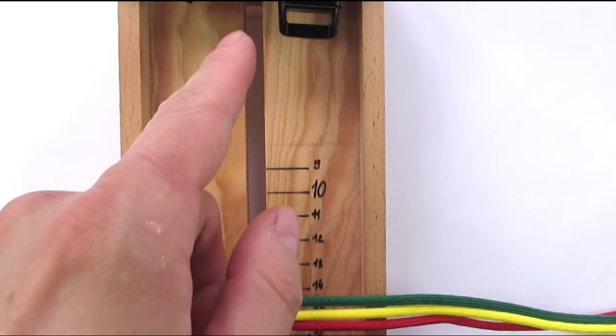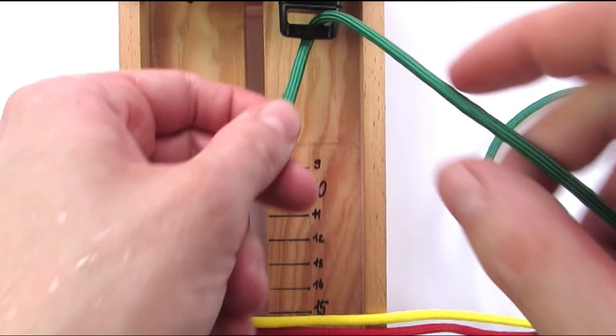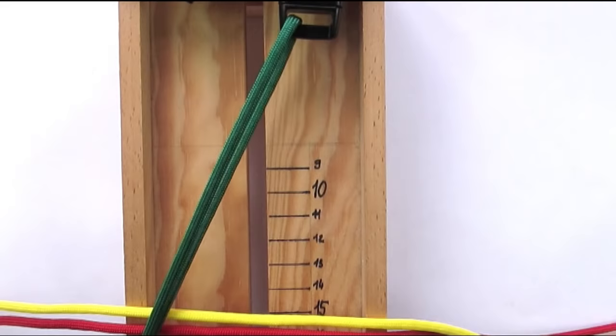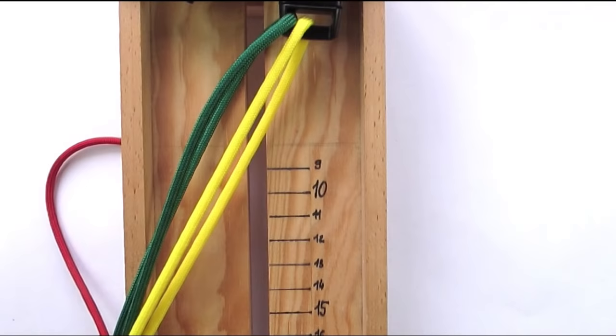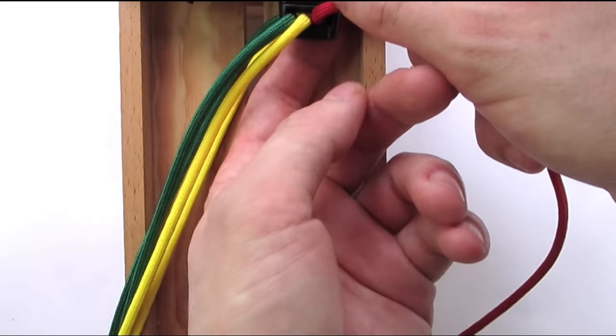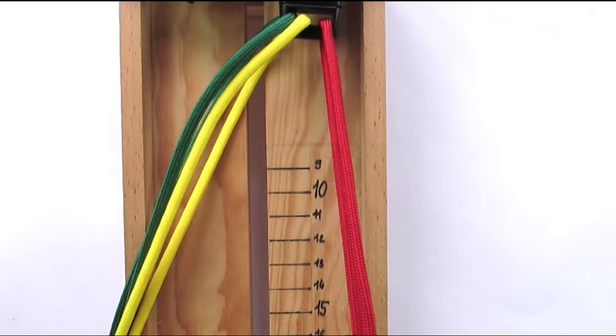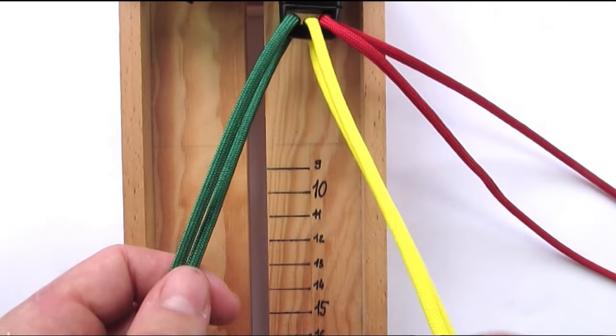So I have my three cords here and I'm going to insert them into the buckle. Just feed one end through and make sure that both ends are about the same length. Do the same with the other cords. I'm going to be using three different colors. That's all there is to do with the basic setup and we're now going to start tying snake knots.